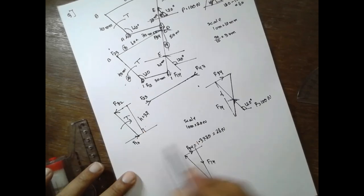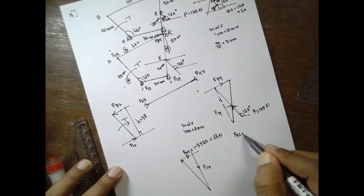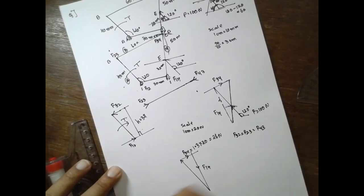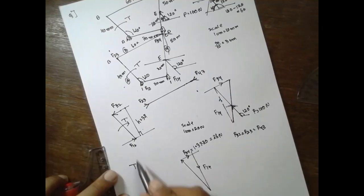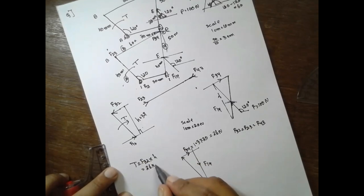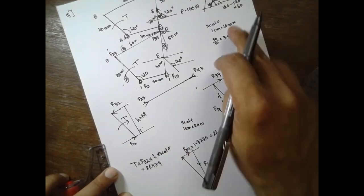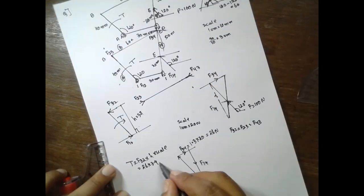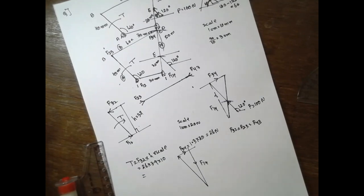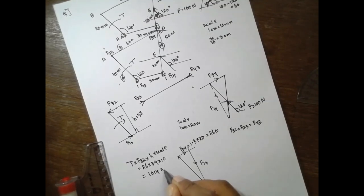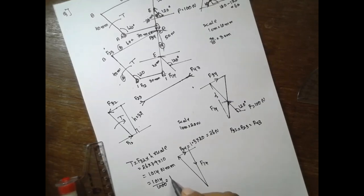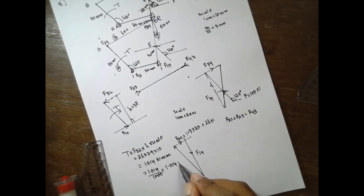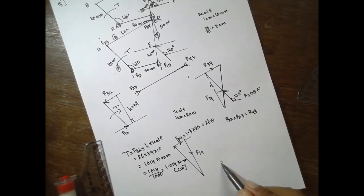Now find out the torque. If it is rotating anticlockwise, the torque has to be applied in the clockwise direction. F32 is equal to F23 is equal to F43 — that is 4.3. T is nothing but F32 into H. What is F32? F32 is nothing but 26. Into 3.9, into scale. What is the scale? You have taken 10 as scale here. Into 10. If you multiply the values: 26 into 3.9 into 10, you will get 1014 Newton mm. Divided by 1000, you will get 1.014 Newton meter in the clockwise direction.